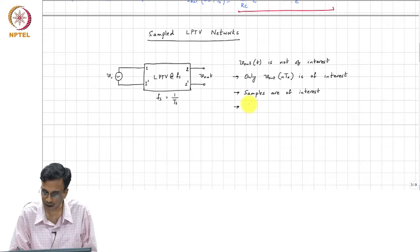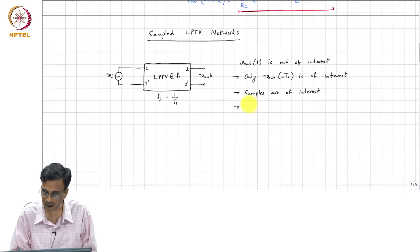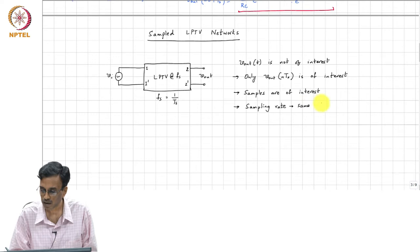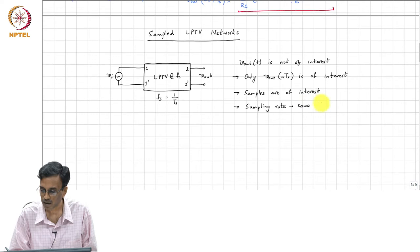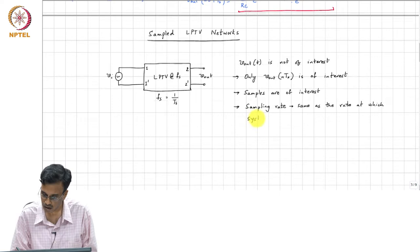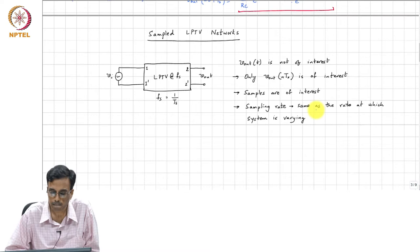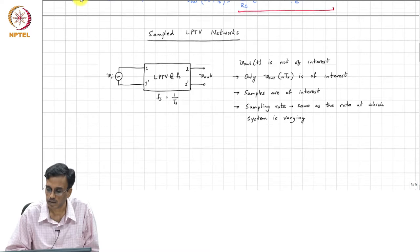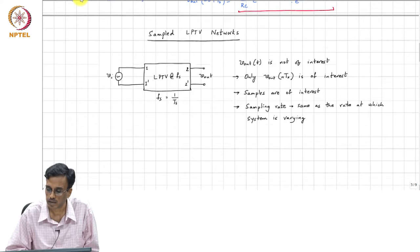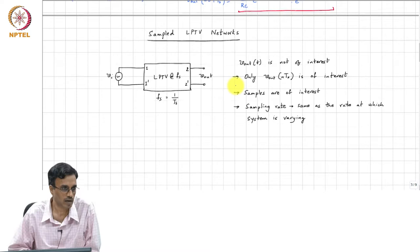And the other key thing is that the sampling rate is same as the rate at which system is varying. So, these are the two key points to understand.